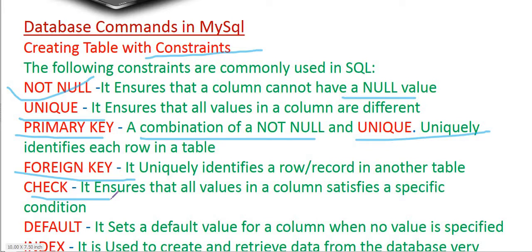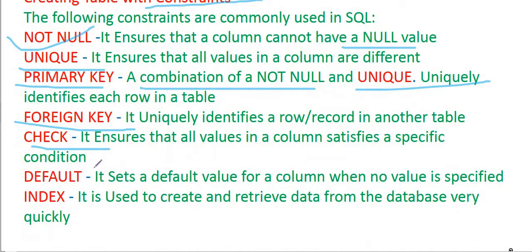The CHECK constraint ensures that all values in a column satisfy a specific condition. For example, for voting, the age must be 18 years or above. In such cases you apply the CHECK condition.